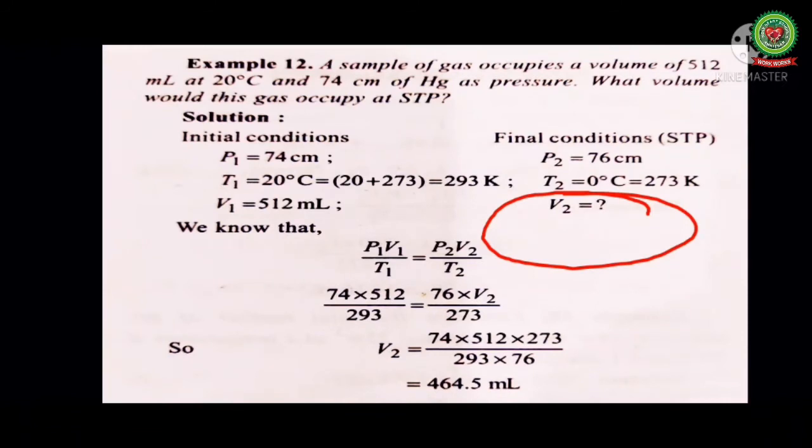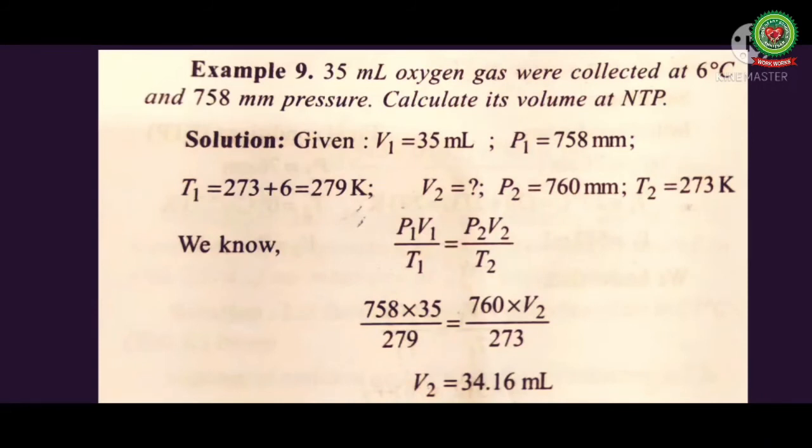Using the equation P1 V1 upon T1 equals P2 V2 upon T2, we have value of P1, V1, and T1, we have value of P2 and T2, and we need to find out V2, that is final volume. Putting all the values we will get value of final volume which is equal to 464.5 ml.